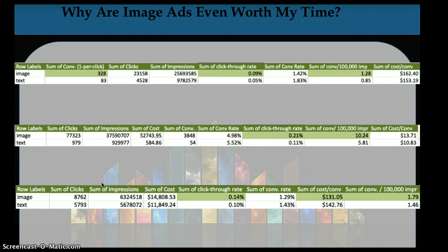For the first account it's almost double, and for the second one it's almost double. For the third one it's a little bit lower, but in the third one the cost per conversion is actually lower. The click-through rate is always higher, and the number of conversions for the first two are higher as well. So if you're really looking to get conversion volume, you want image ads on the display network if you're doing display.